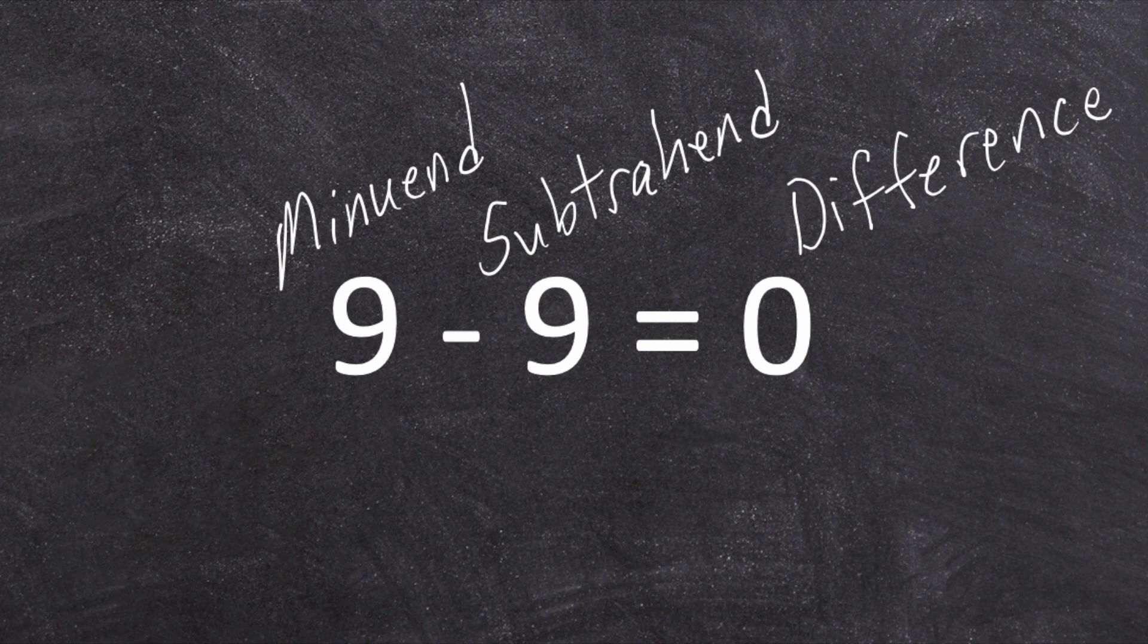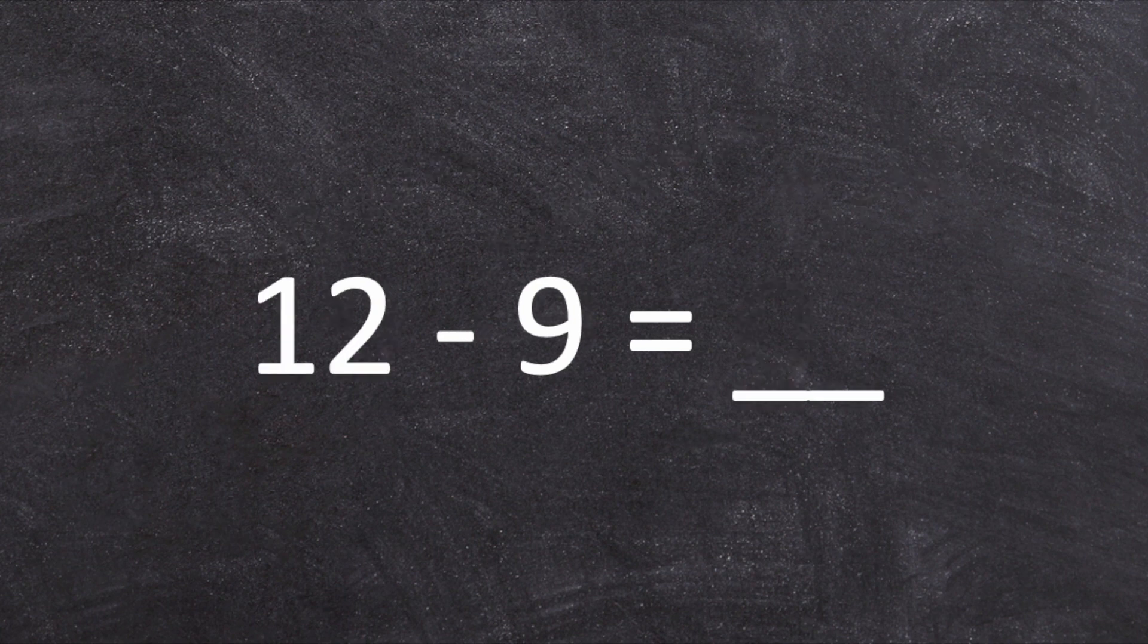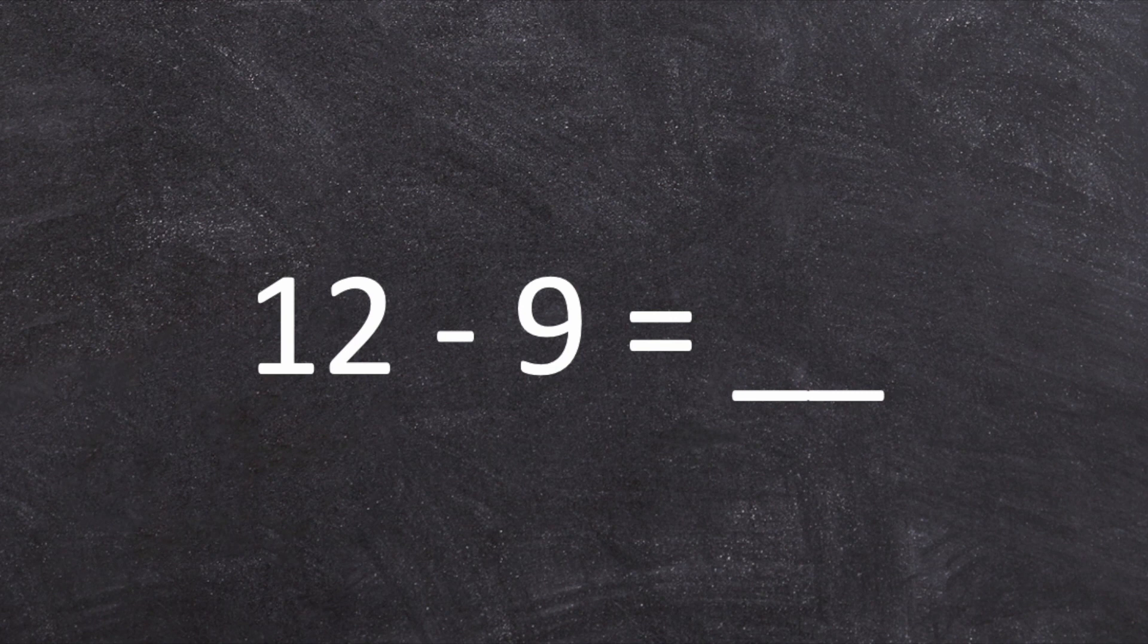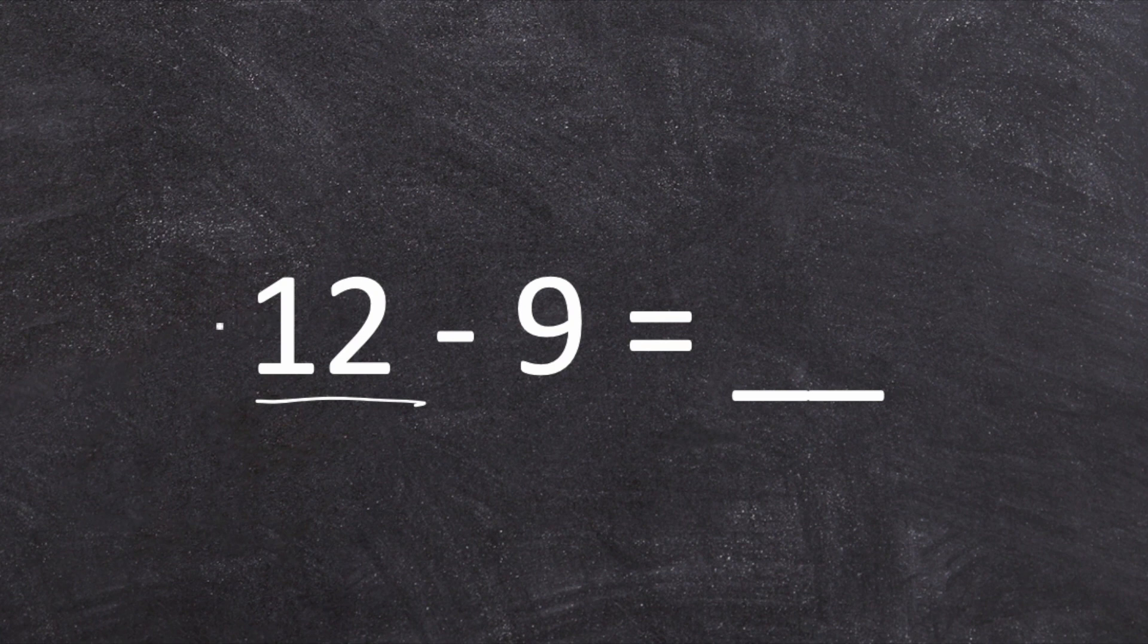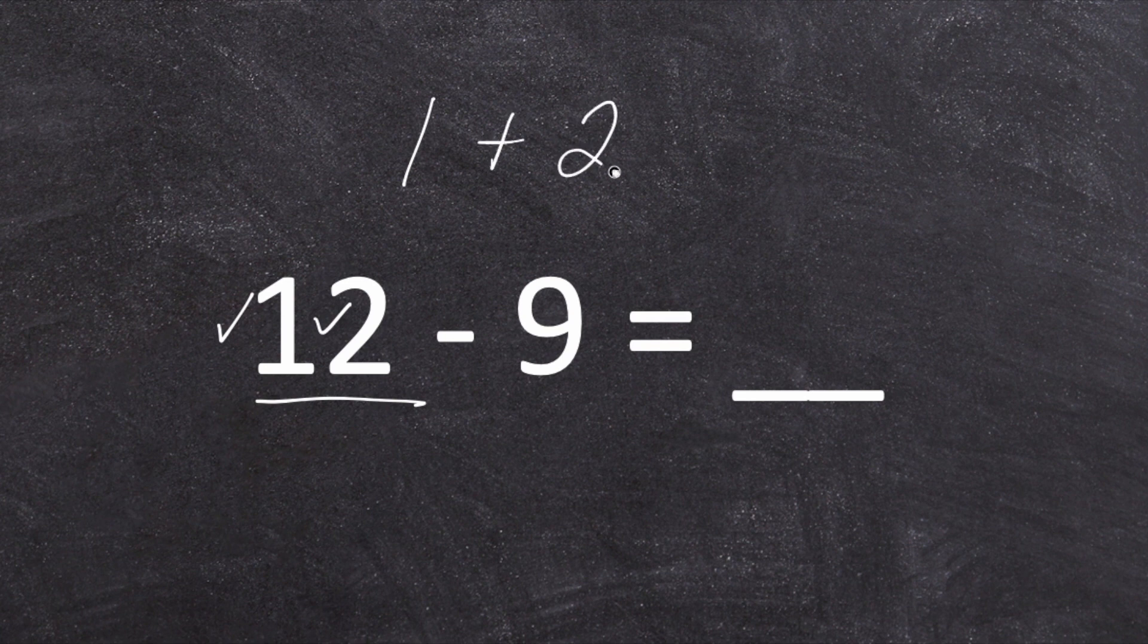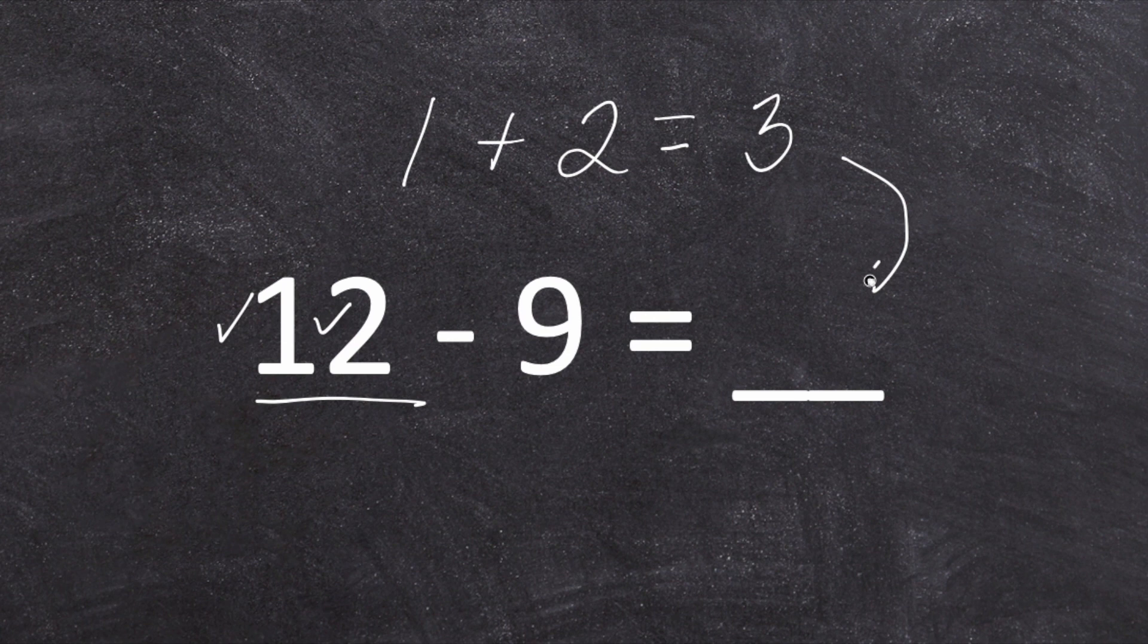Let's say we have a number sentence and we're not sure of our answer. Twelve minus nine equals blank. There's a little trick we can use to figure out the answer. The first thing we're going to do is look at our minuend. Our minuend is made up of two digits, one and two. We're going to add those two digits together.